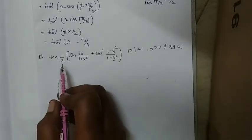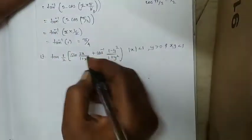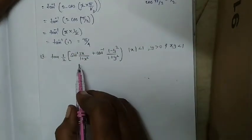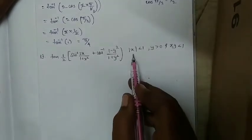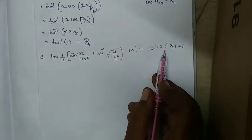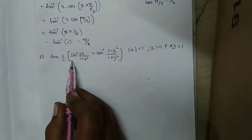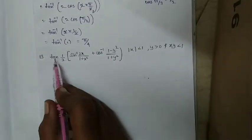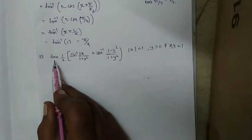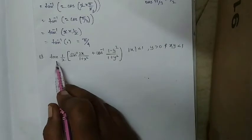The next question is tan of (1/2)[sin inverse(2x/(1+x²)) + cos inverse((1-y²)/(1+y²))], with conditions |x| ≤ 1 and |y| ≤ 1. We have tan here — not tan inverse — with sin inverse and cos inverse inside. We first need to solve the sin inverse and cos inverse parts to simplify with the outer tan.